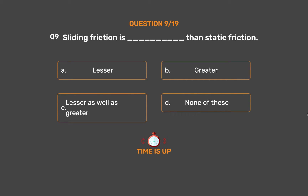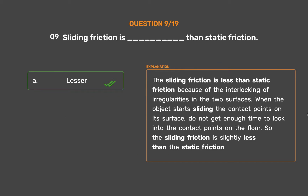The correct answer is Option A: Lesser. Sliding friction is less than static friction because of the interlocking of irregularities in the two surfaces. When the object starts sliding, the contact points on its surface do not get enough time to lock into the contact points on the floor, so the sliding friction is slightly less than the static friction.